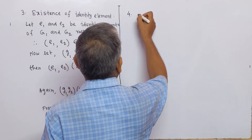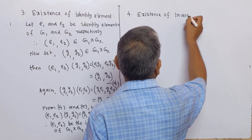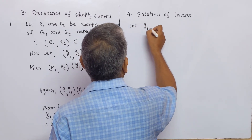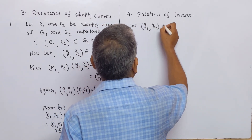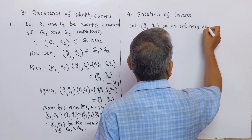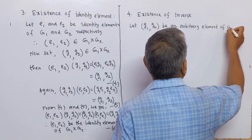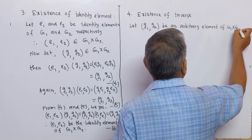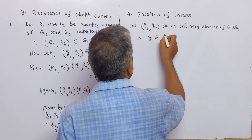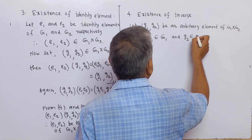Number four: Existence of inverse. Let (g1, g2) be an arbitrary element of the direct product G1 × G2. This implies that g1 belongs to group G1 and g2 belongs to group G2, so the inverses g1⁻¹ and g2⁻¹ exist in G1 and G2 respectively.